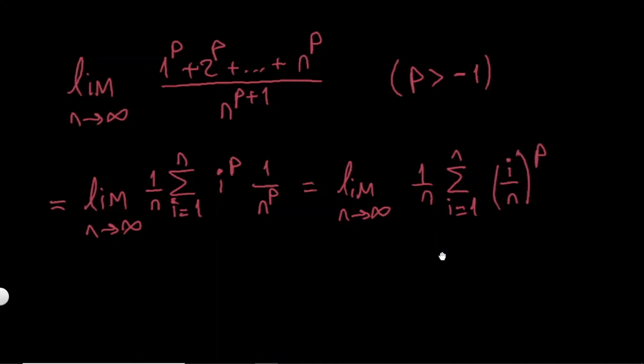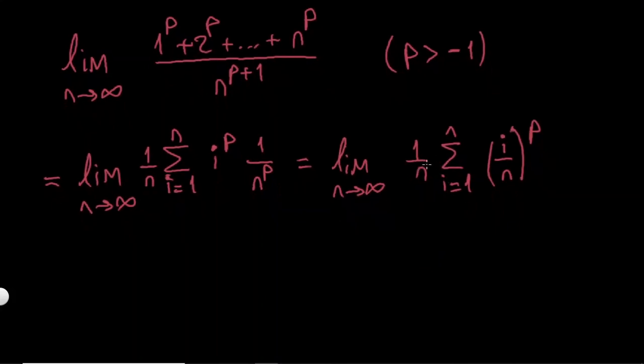Here I recommend you watch the previous video because I explained how I can write it in the integral form. I'm multiplying I by 1 over N, so my Delta X is 1 over N, which is also B minus A over N.